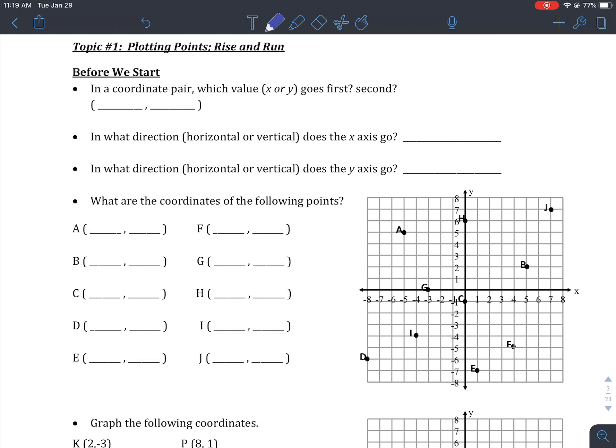Alright, welcome back. We're going to start talking about slope and rate of change. And before we do that, we do have to talk a little bit about coordinate pairs. So a coordinate pair is just going to look like a set of brackets with two numbers in it, and they're going to be separated by a comma.